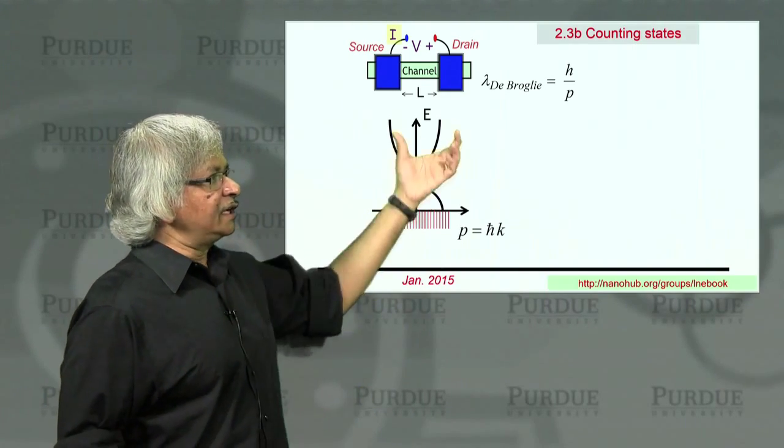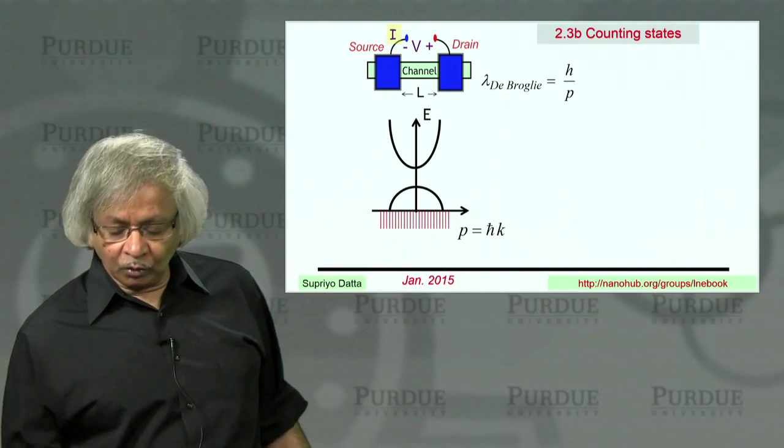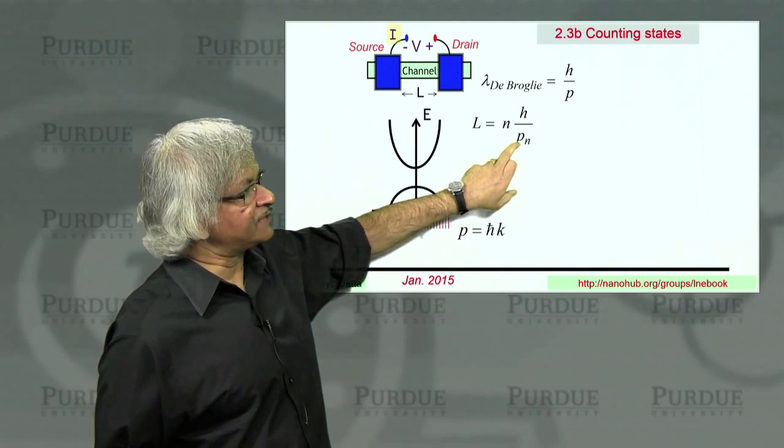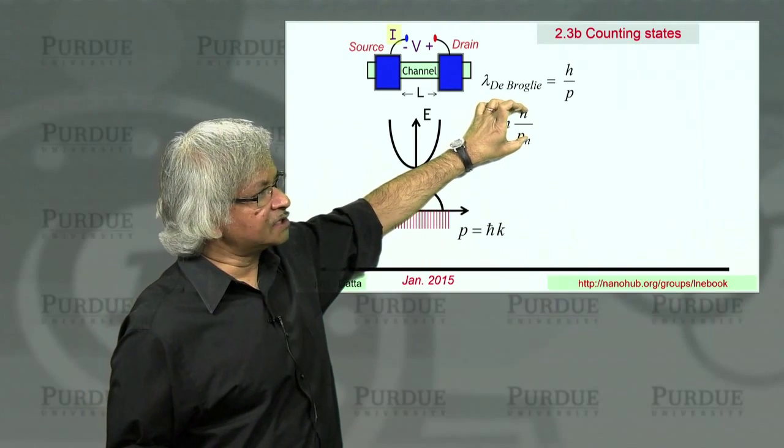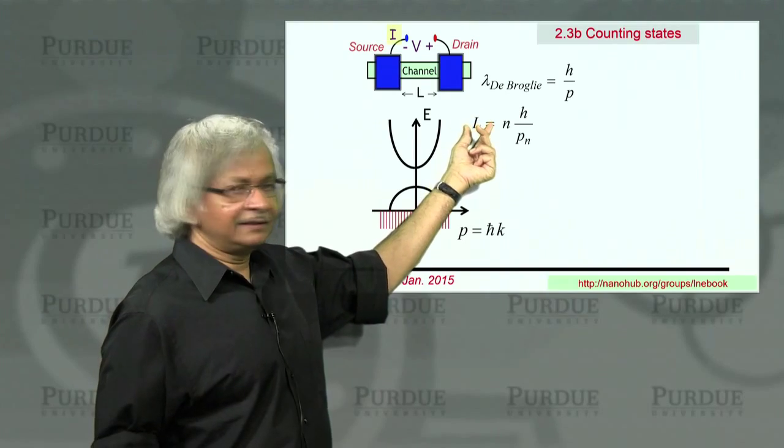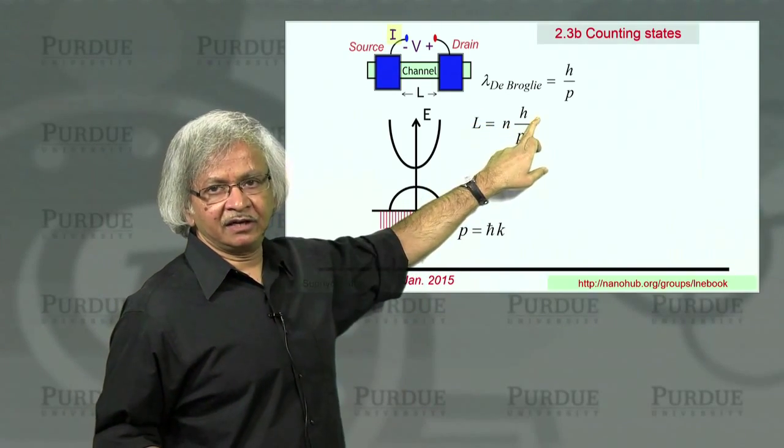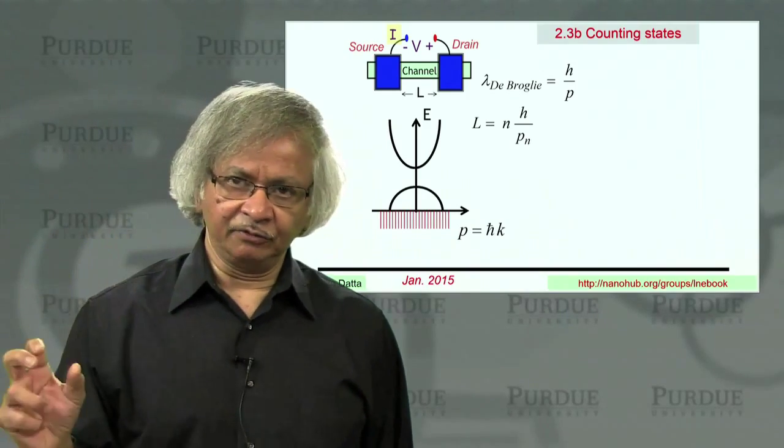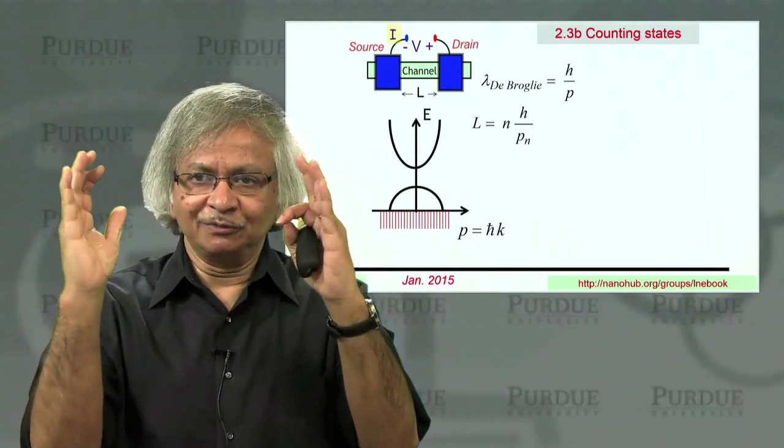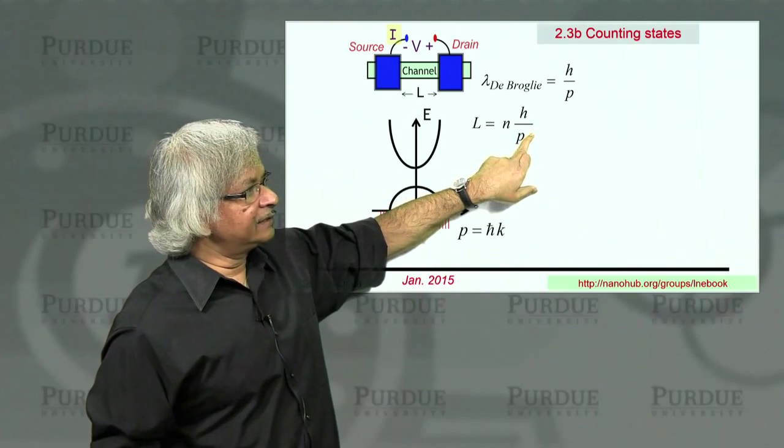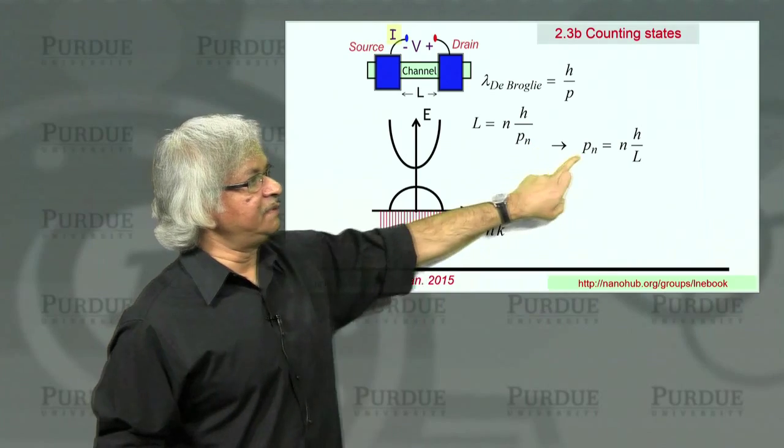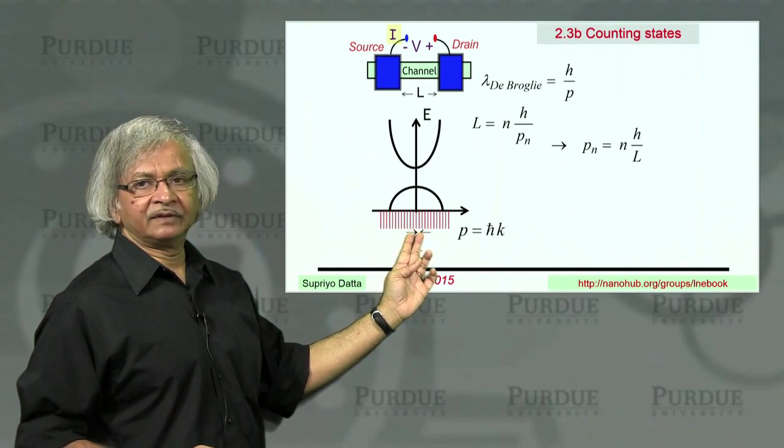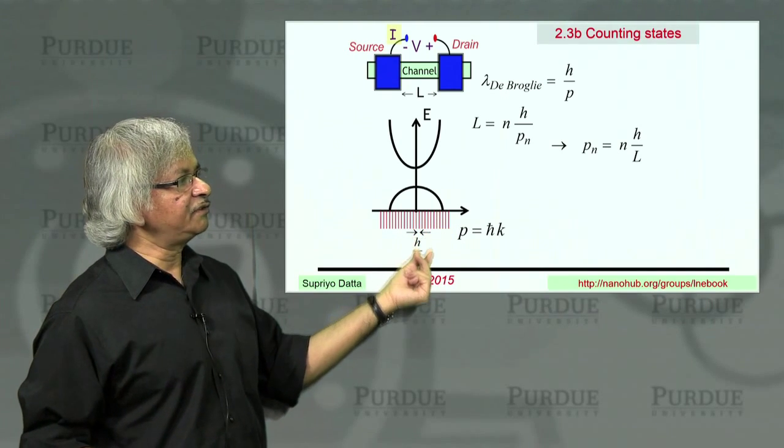So then what we argue is, if you have a solid with a given length L, then only those momenta are allowed - the electron cannot have any momentum. It can only have certain values p_n, such that the corresponding wavelength is h over p_n, and the length of the solid is an integer number times the wavelength. So the condition you are imposing is that an electron with a certain momentum has a certain wavelength, and that wavelength must fit into this box of length L. If you accept that, we could turn that around and say p_n must be an integer times h over L. And that immediately tells you what this spacing is. The allowed values of p are simply discrete multiples of h over L.